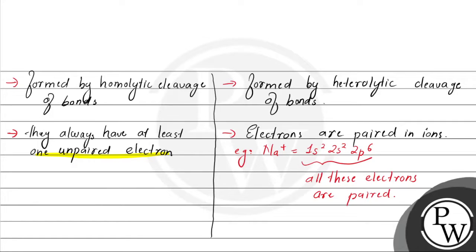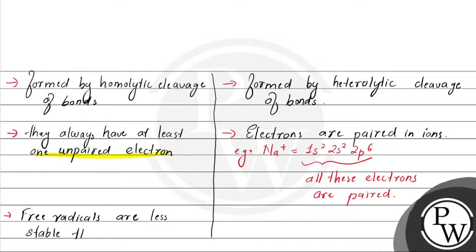The fourth point is, free radicals are less stable than ions. Yhe free radicals jo hote hain, unki stability ions ke comparison mein kam hoti hai. On the other hand, joh ions hote hain, jinn mein sare electrons paired state mein hote hain, they are more stable than free radicals.